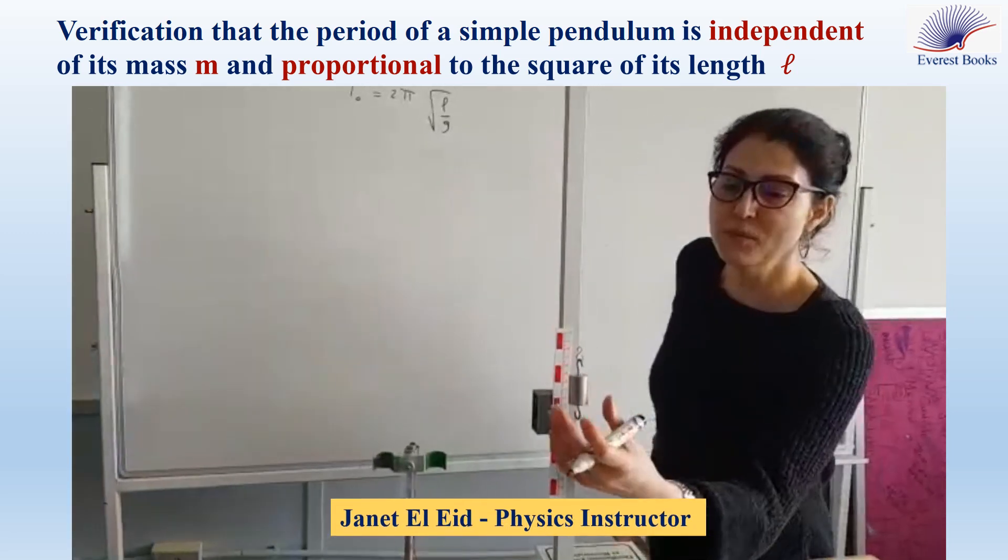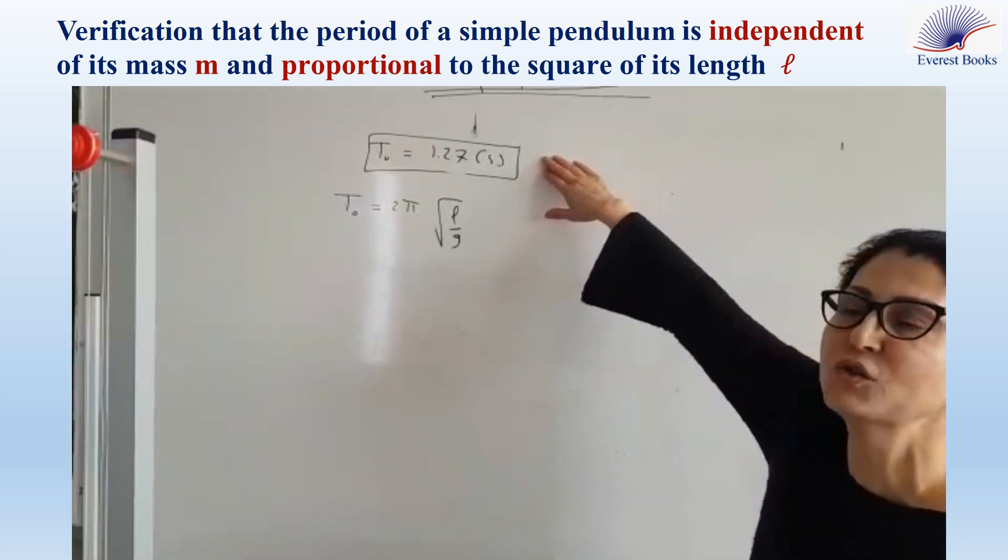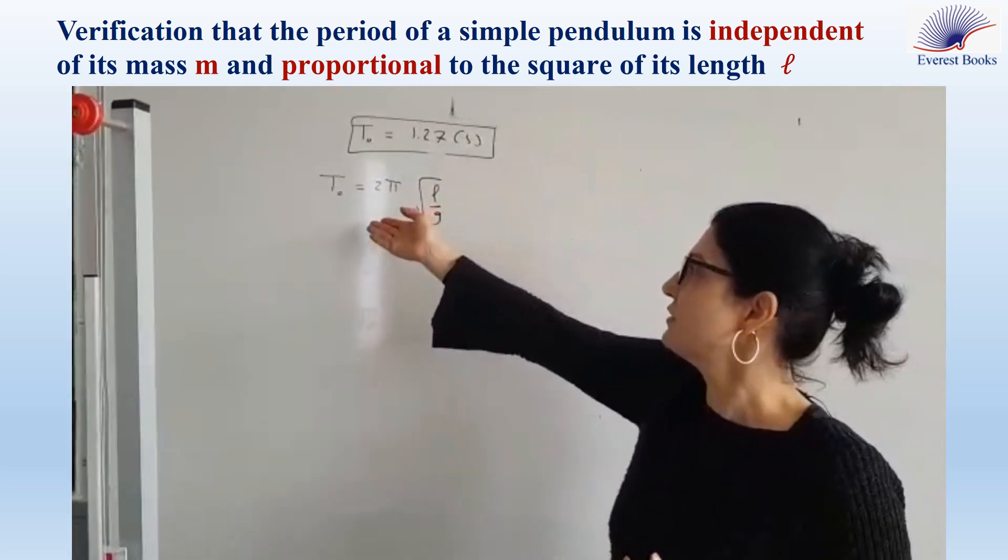In the previous experiment, we determined the natural period of our pendulum and the value was 1.27 seconds. Now look at the formula.